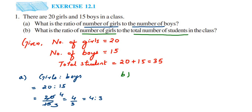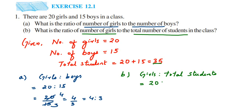For the second question, we need the ratio of number of girls to the total number of students. The total number of students is 35. So we have girls to total students: girls are 20, so this becomes 20 is to 35. We have to reduce it, since ratios are always in reduced form.